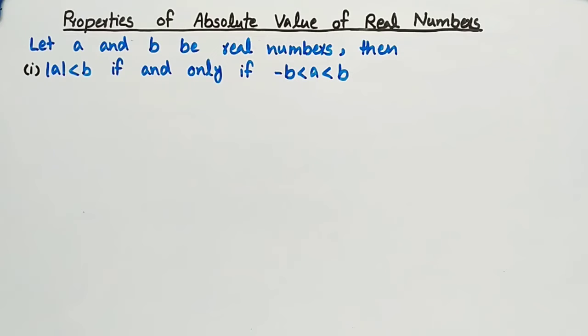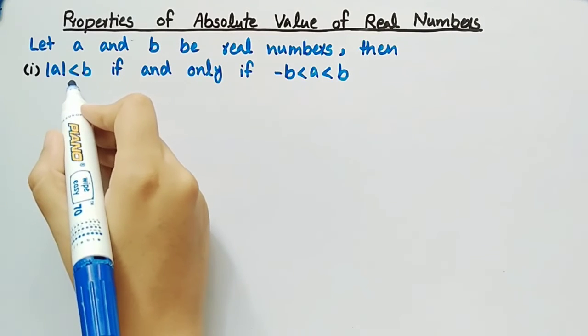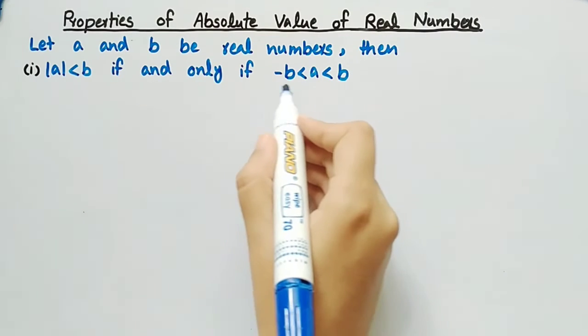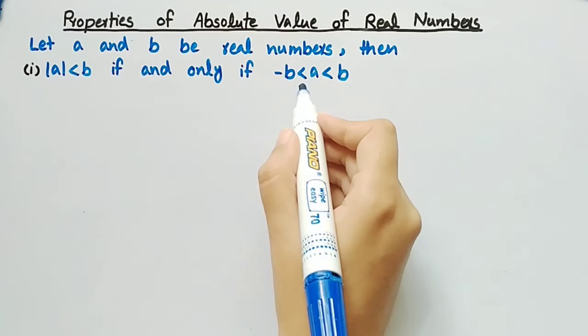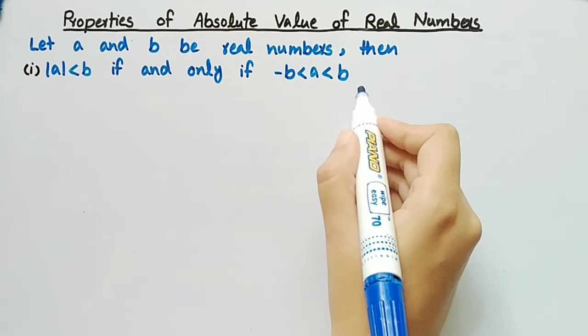The first property is: the absolute value of A is less than B if and only if minus B is less than A is less than B.